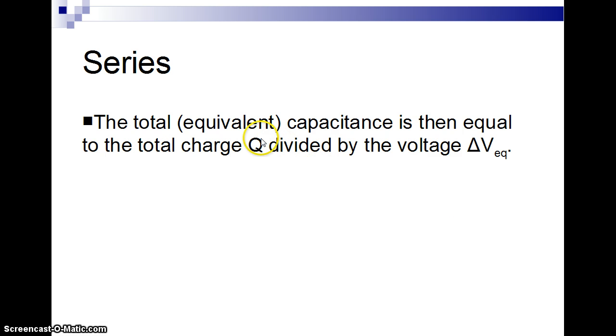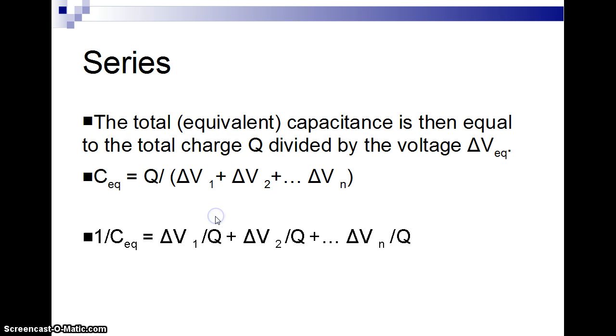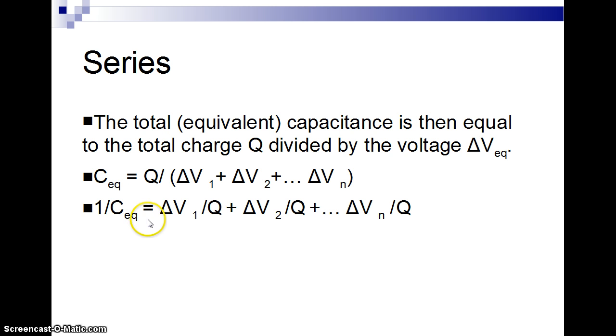We're going to take the same thing: total charge divided by the equivalent voltage, Q divided by adding up all the voltages. The problem is it's in the denominator, so we can't distribute things like we did with parallel. What I'm going to do to make it easier is take the reciprocal of everything. So 1 over the equivalent capacitance is voltage 1 over Q plus voltage 2 over Q, and so on.